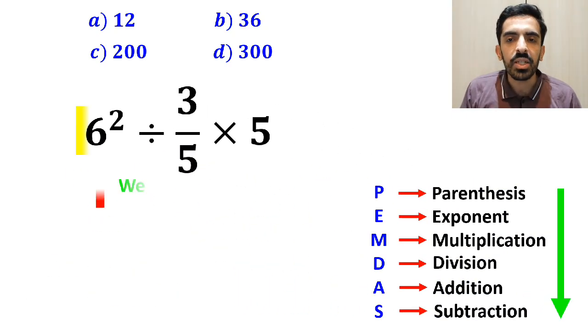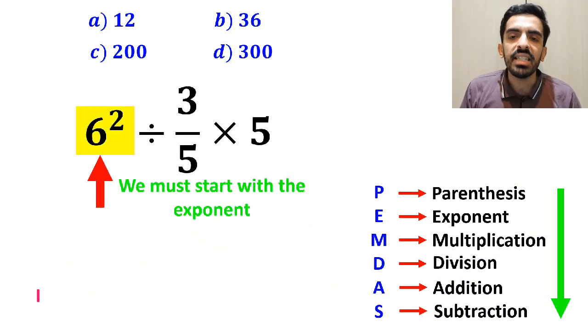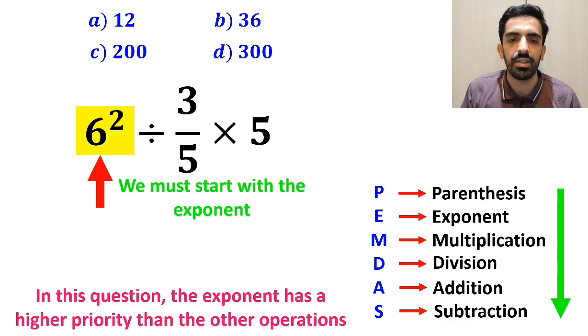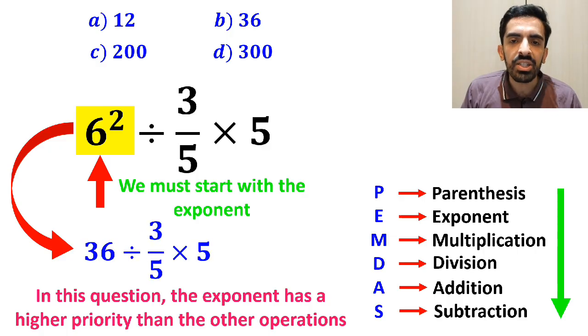First we must start with the exponent, because in this question, exponent has a higher priority than the other operations. So, instead of this expression, we can write 36 divided by 3 over 5 multiplied by 5.